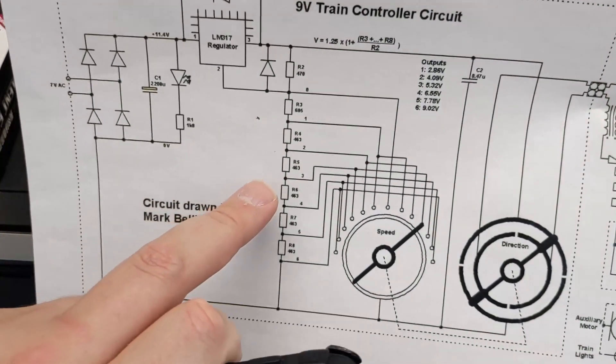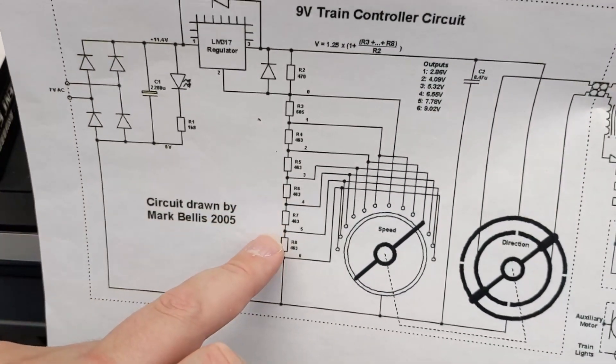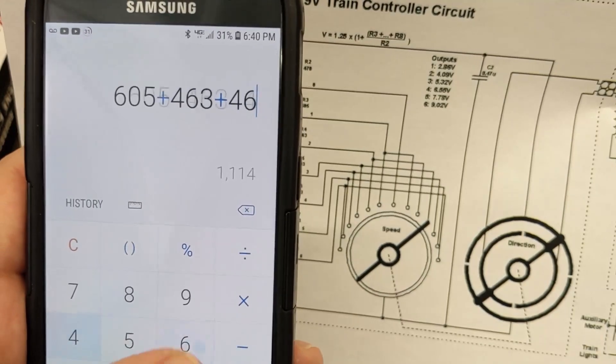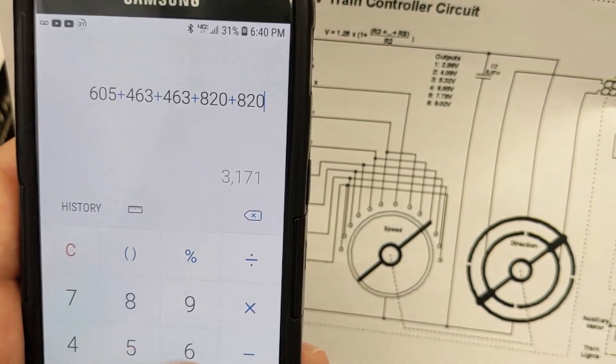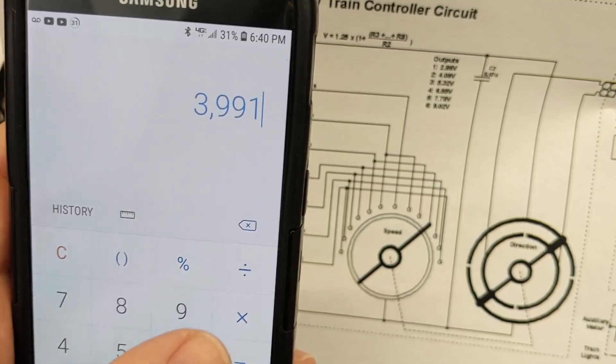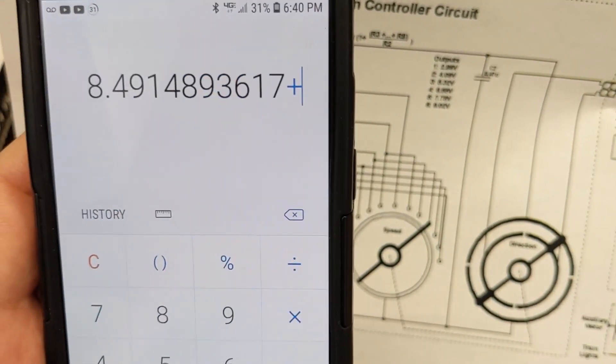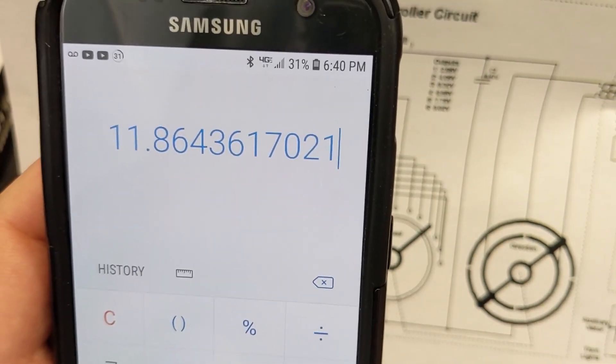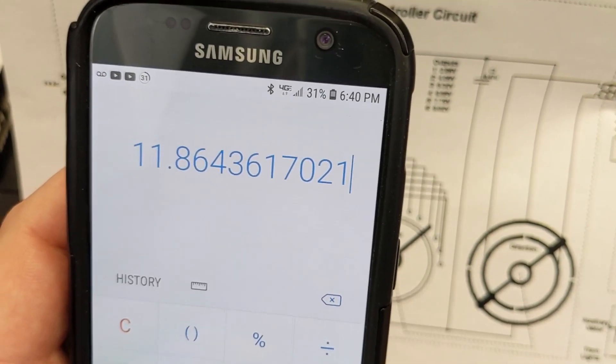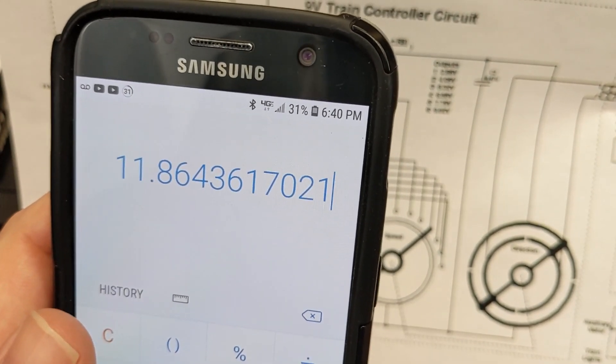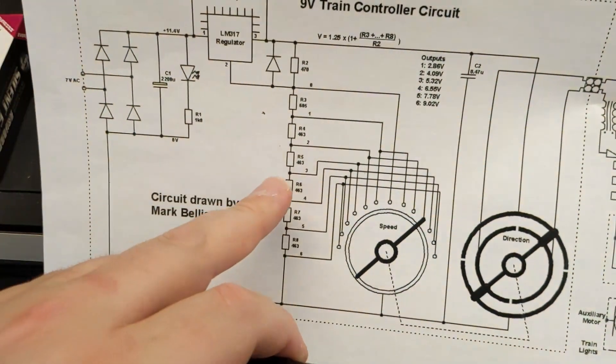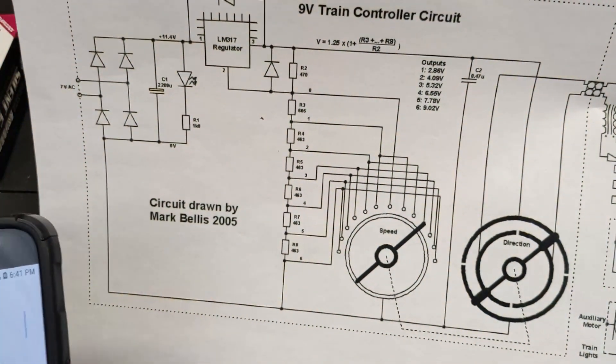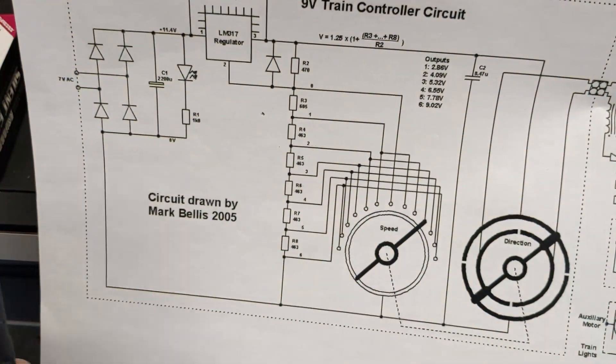And what I've found, what I want to do is replace these last three with 820. So we're going to do 605 plus 463 plus 463, 820, 820, 820. Now let's divide by 470, add one, multiply by 1.25. 11.86 volts. And that's close enough to 12 for me without having to purchase very specific resistors.